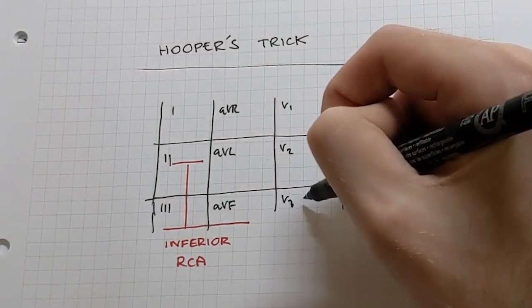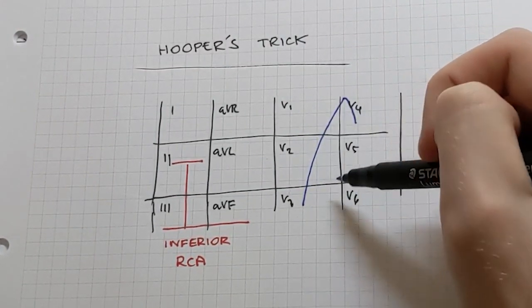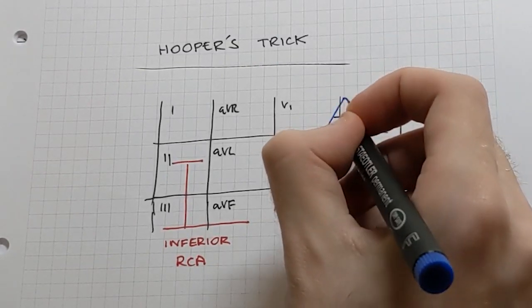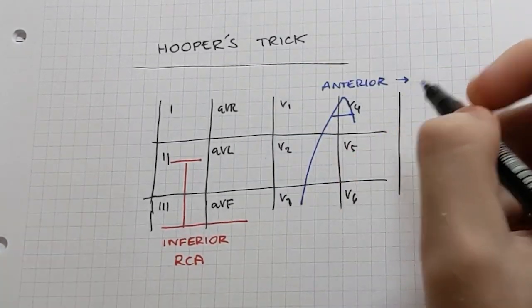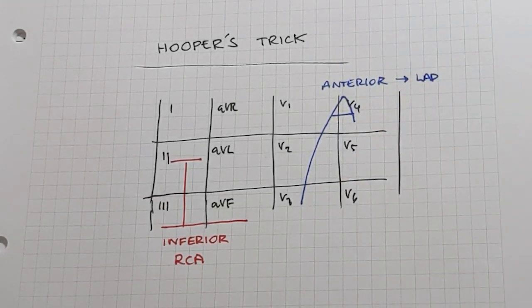We are then going to draw ourselves a big capital A that extends all the way from V1 to V3 and then includes V4, like that. So that's the anterior territory, and that's going to correspond to our left anterior descending artery.